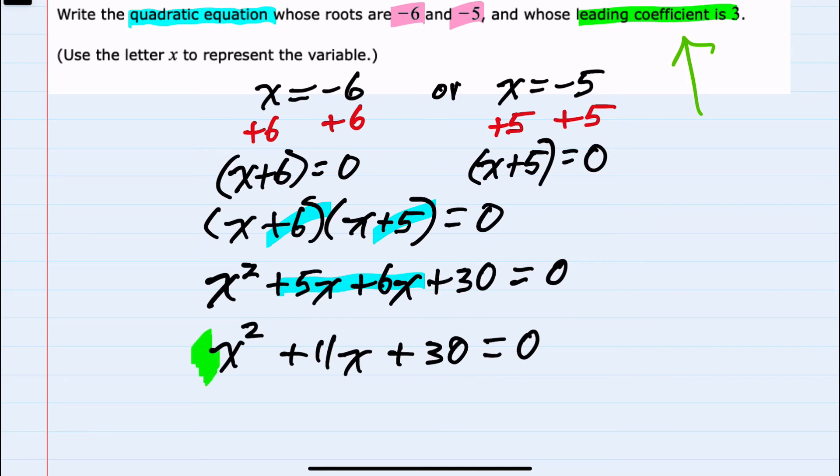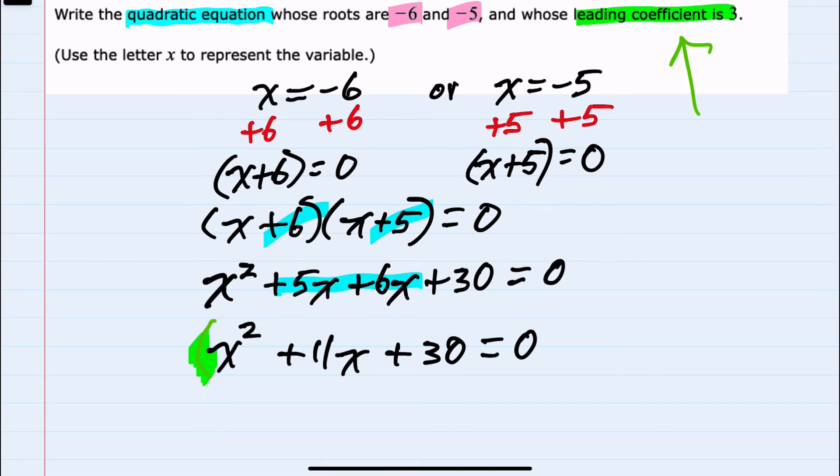But since we have an equation, we can multiply everything on the left-hand side by 3 as long as we also multiply the right-hand side by 3. And since the right-hand side is 0, 0 times 3 will still be 0.